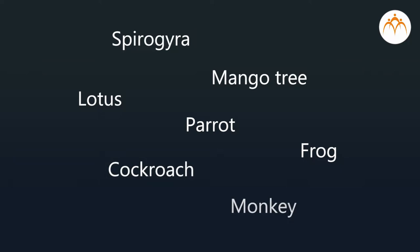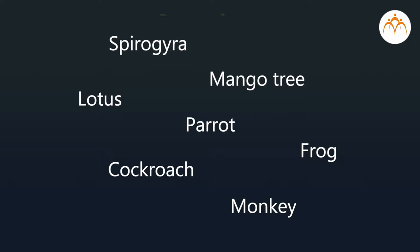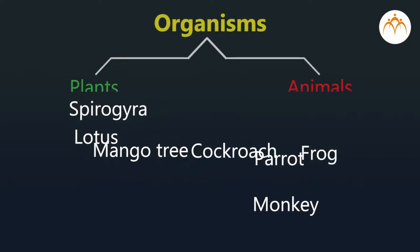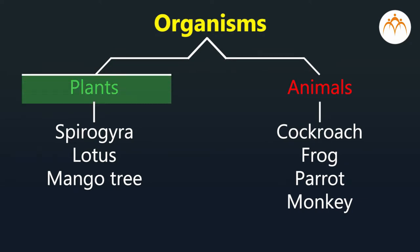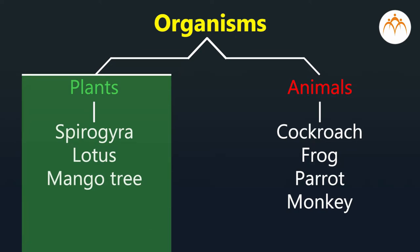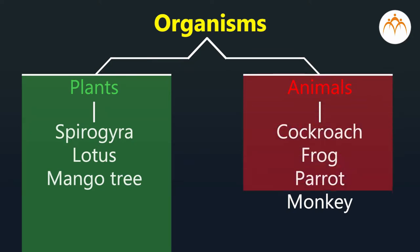Now we will group organisms from a given list. Let's group them based on the food they eat and locomotion. Organisms in the plants group prepare their own food but do not show locomotion. On the other hand, animals cannot prepare their own food but they show locomotion. In this way, by studying features of organisms, groups and subgroups are made.